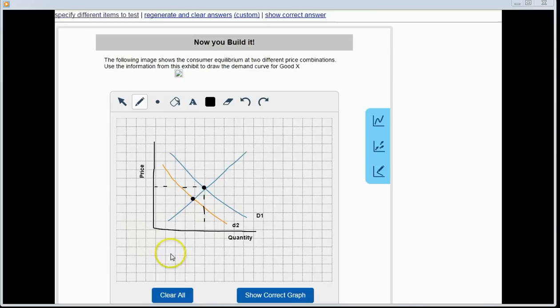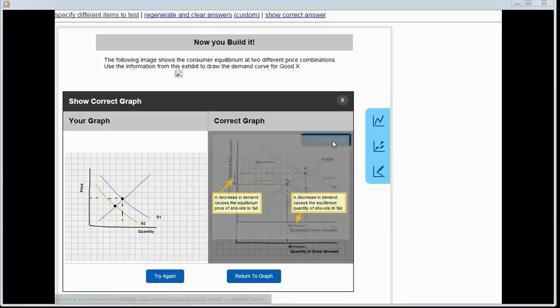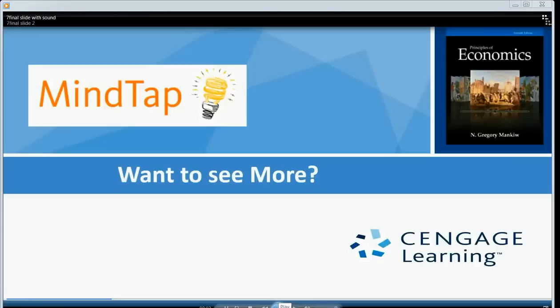So you get the idea. Students have the ability to actually draw real graphs. If they wanted to see what the correct graph would look like, they just click on this and they can compare. If they want a full explanation, they just go ahead and do that.